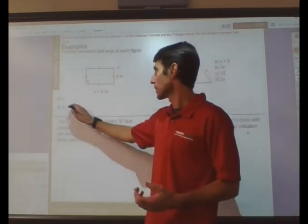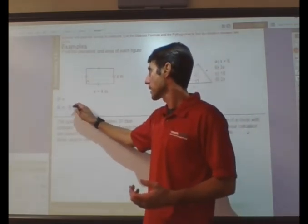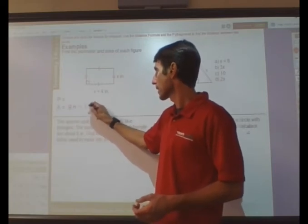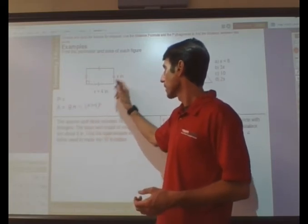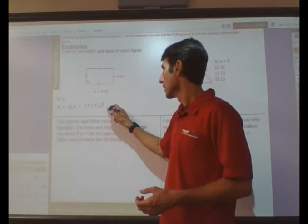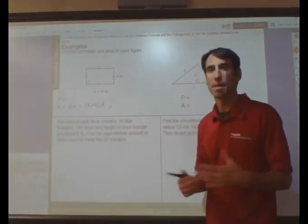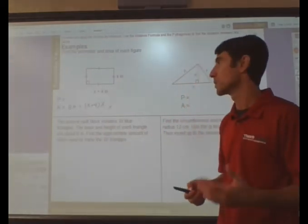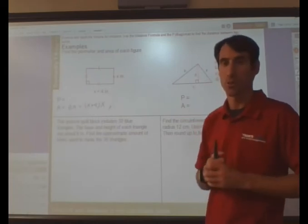Now, the area is going to be equal to the base times the height. Well, the base in this case is x plus 4. The height is x. So, I can write it in factored form, and that's okay. I don't need to expand it. But if I wanted to, you could also say x squared plus 4x.